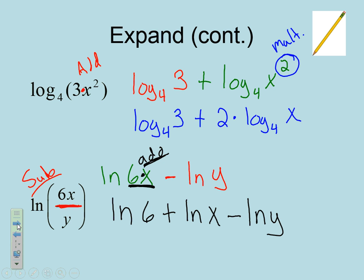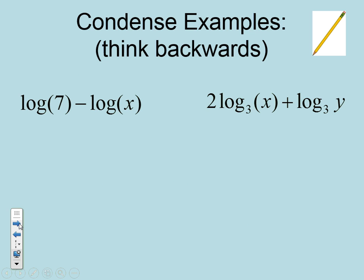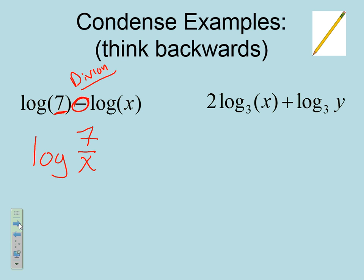Now the fun part — we're going to go from expansion to condensing, working our way backwards. Looking at this first example, we're using subtraction. The opposite of subtraction is division, so we're going to be dividing — it's going to be a fraction. I'm going to write my log, and working from left to right, since I'm doing division, the first number goes on top: 7 over x. And then I am done.